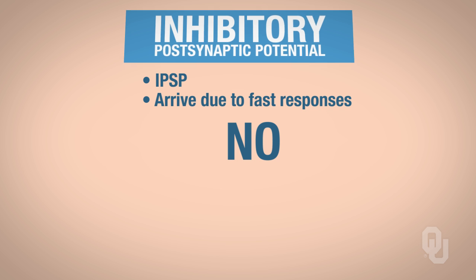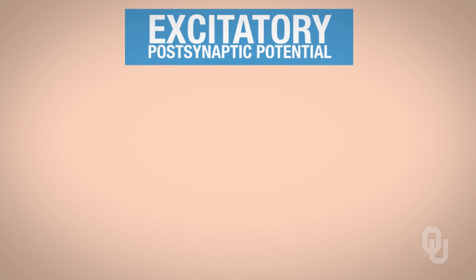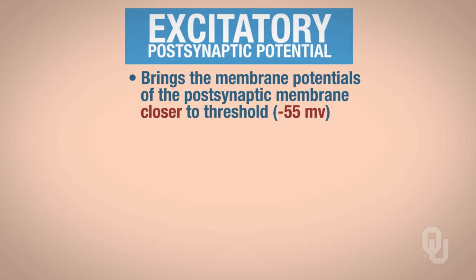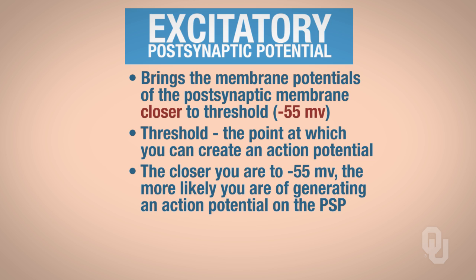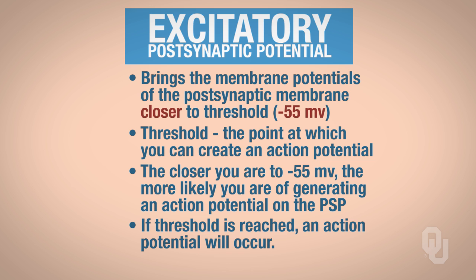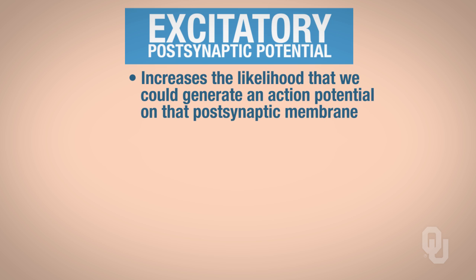Let's go ahead and focus now on the excitatory postsynaptic potential. For an excitatory postsynaptic potential, we want to bring the membrane potential of the postsynaptic membrane closer to threshold. Threshold is negative 55 millivolts. If we could bring the membrane potential closer to threshold — the point at which you could generate an action potential — the closer you are to negative 55 millivolts, the more likely you are of generating an action potential on the postsynaptic neuron. So an excitatory postsynaptic potential increases the likelihood that we could generate an action potential on that postsynaptic membrane.